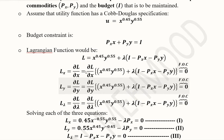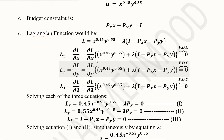Now we can develop the first order conditions, which are all set equal to zero. The first one is with respect to the first independent variable X, the second one is with respect to Y, and the third one is with respect to lambda, which is the third parameter in our analysis.